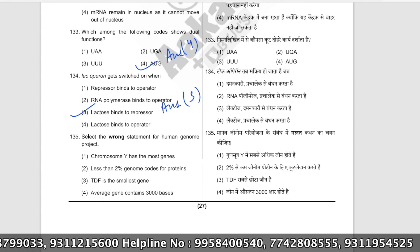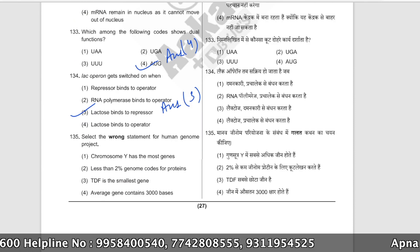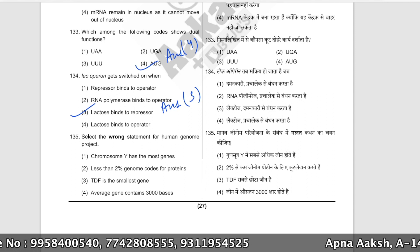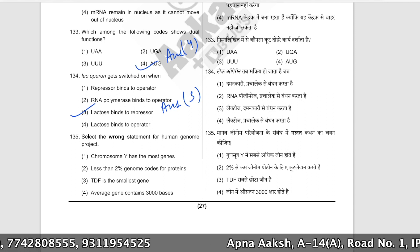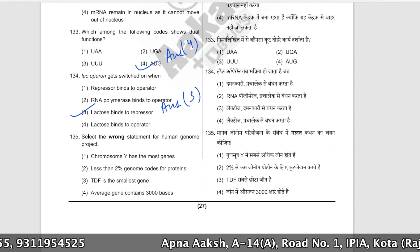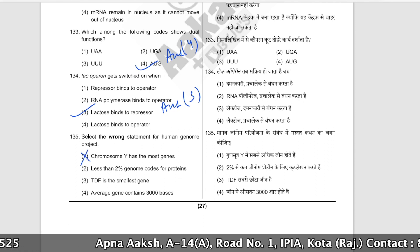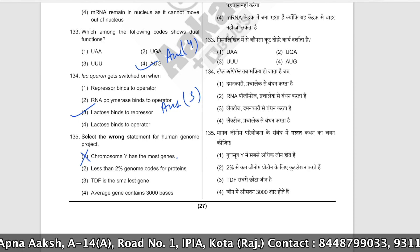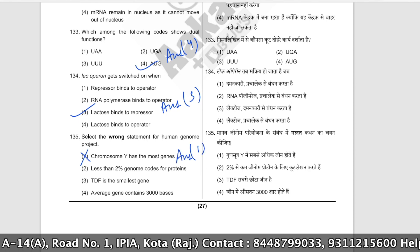Select the wrong statement for the Human Genome Project. The wrong statement is that chromosome Y has the most genes — in fact, chromosome Y has the fewest genes. That is the incorrect statement, and that is also the correct answer option.